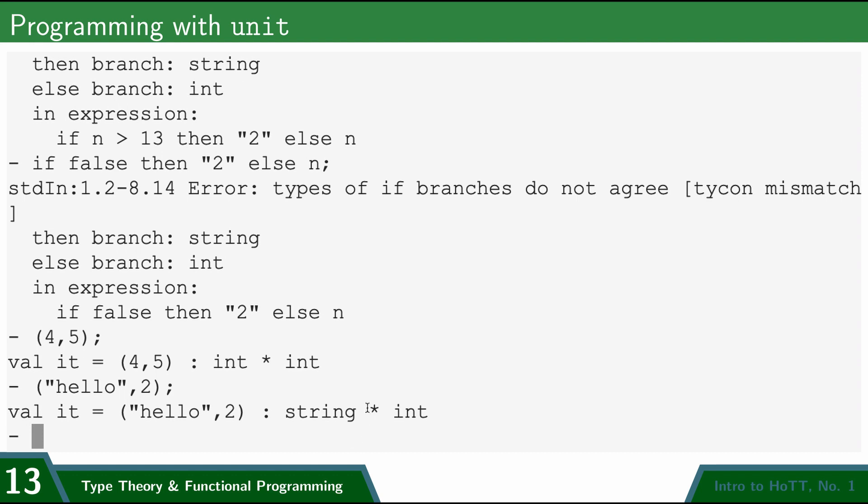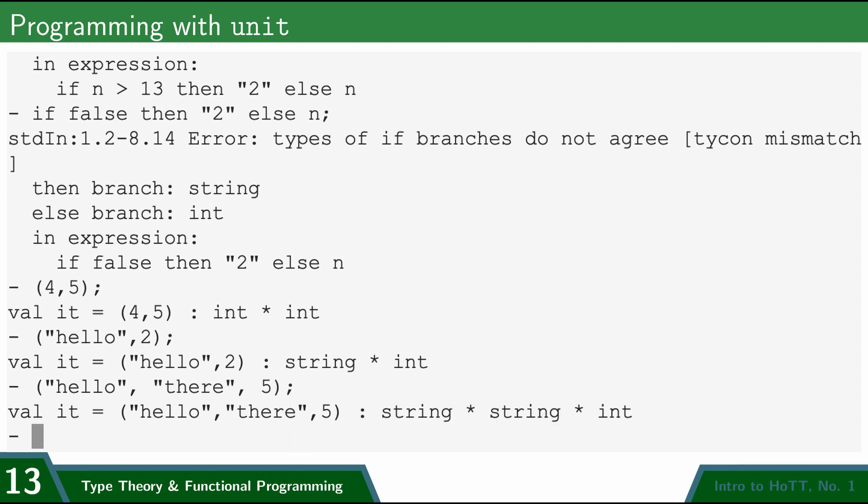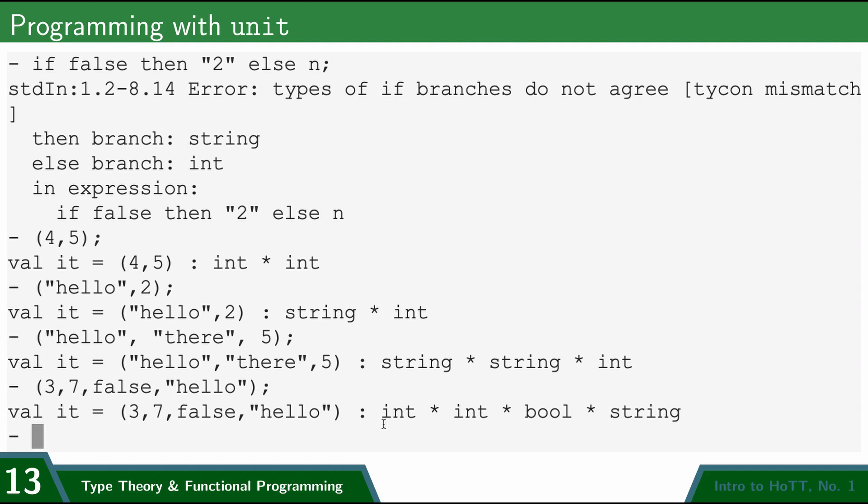I'll say more later about what this star operation is, but for now you can just think of it as the type of pairs of a string and an int. I can also have more things than just two. So I can have hello there and 5, and that's a string string int. Or I can do 3, 7, false, hello. And it has int int, bool is the type of booleans, true or false, and then a string. And so on to my heart's content.